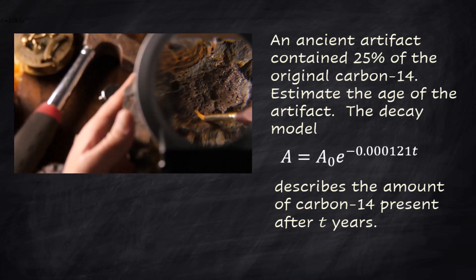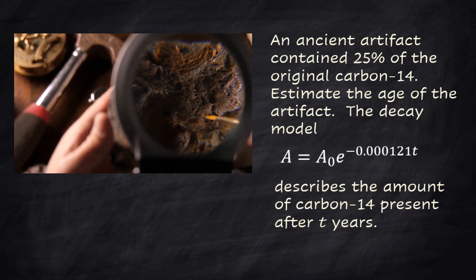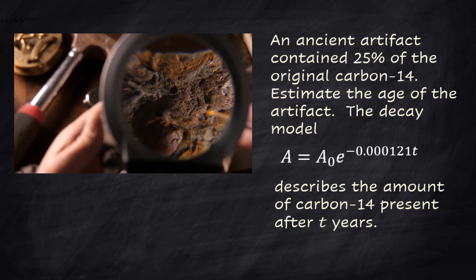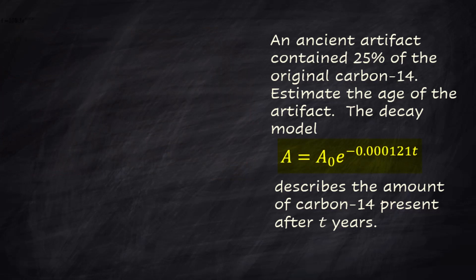An ancient artifact contained 25% of the original carbon 14. Estimate the age of the artifact. The decay model A equals A sub 0 e to the negative 0.000121t describes the amount of carbon 14 present after t years. Again it looks very intimidating but you're really just going to set up this exponential equation and then solve it using natural log.